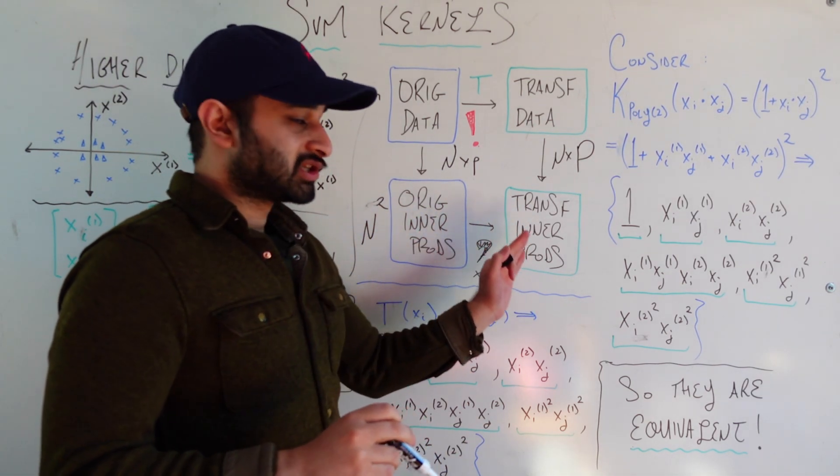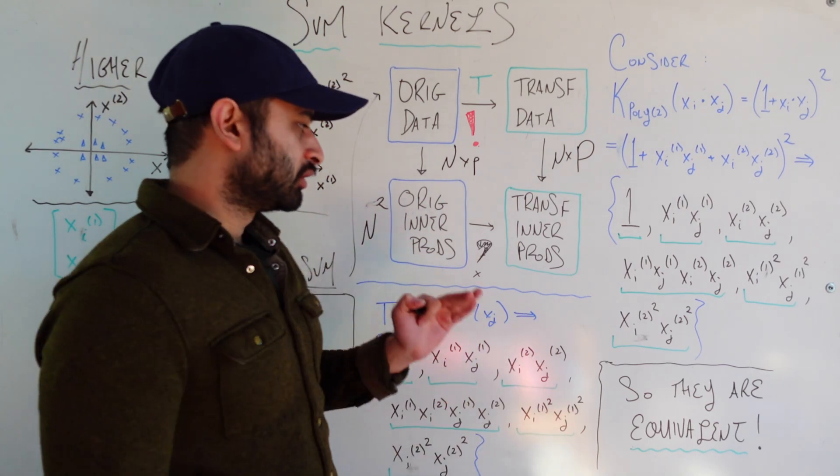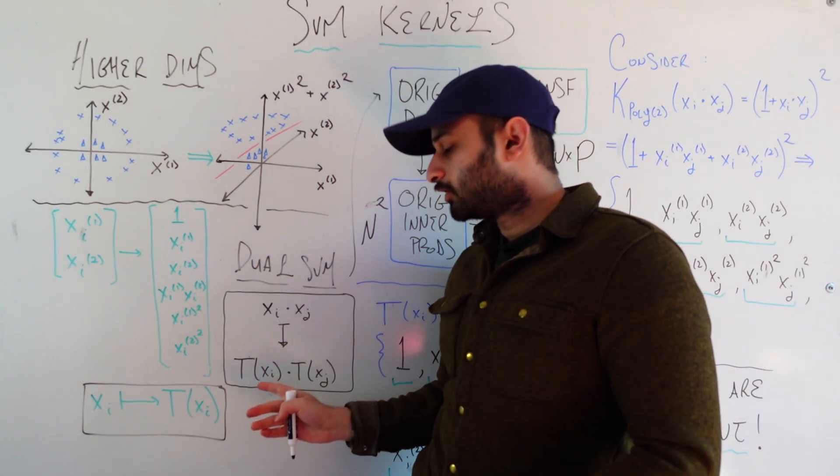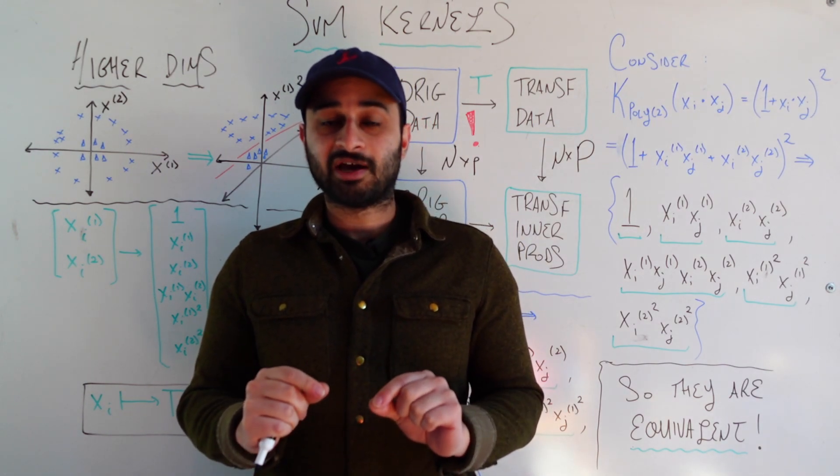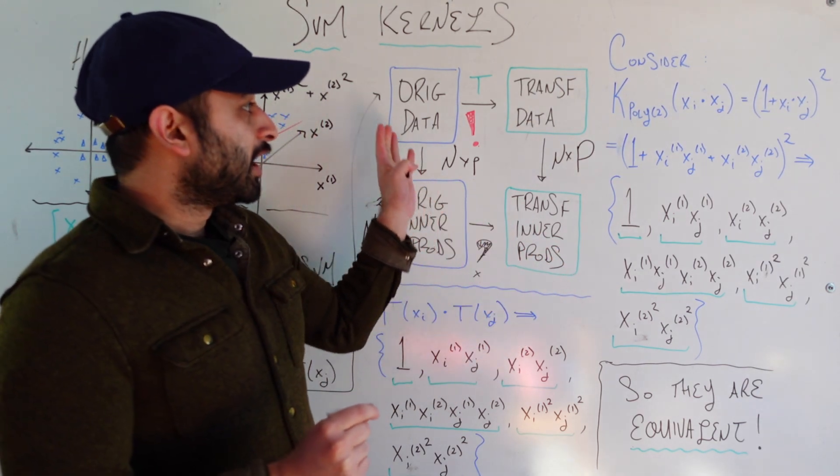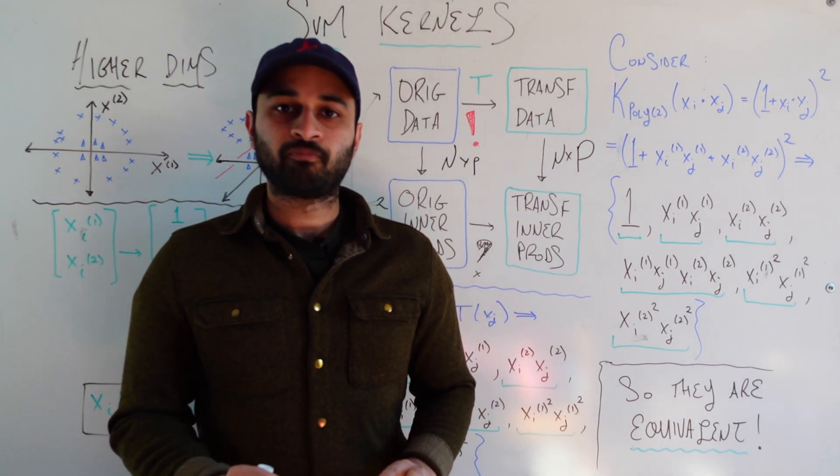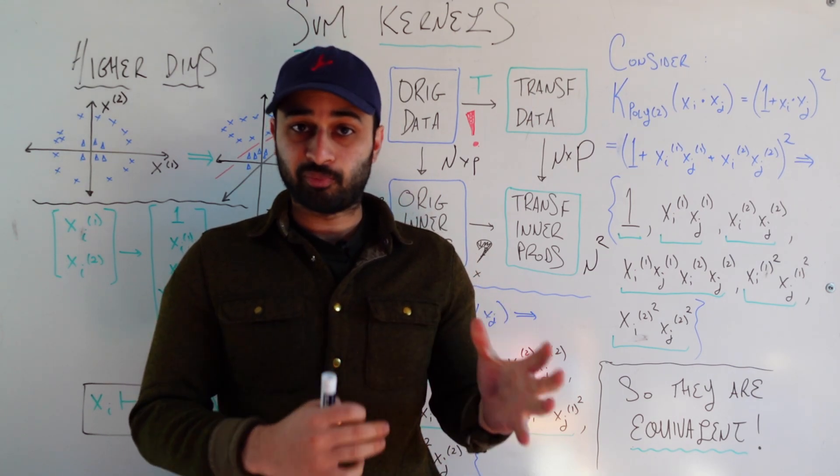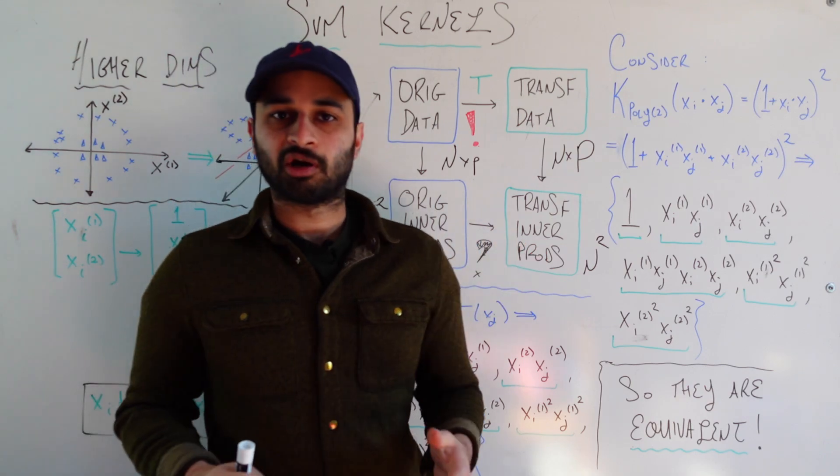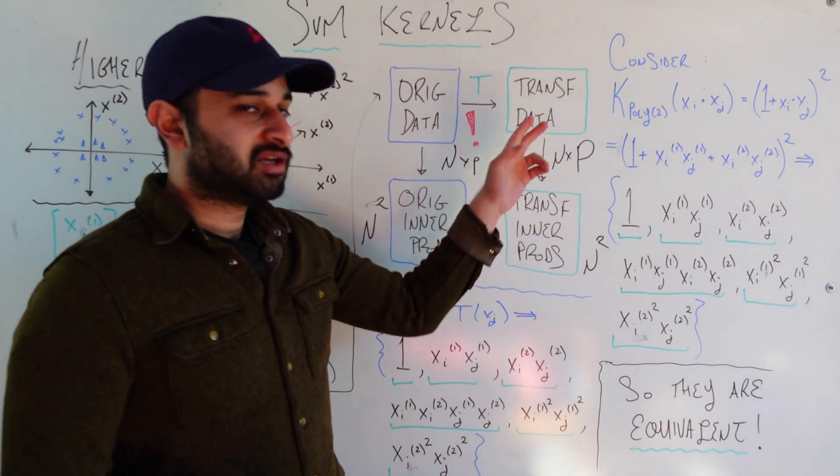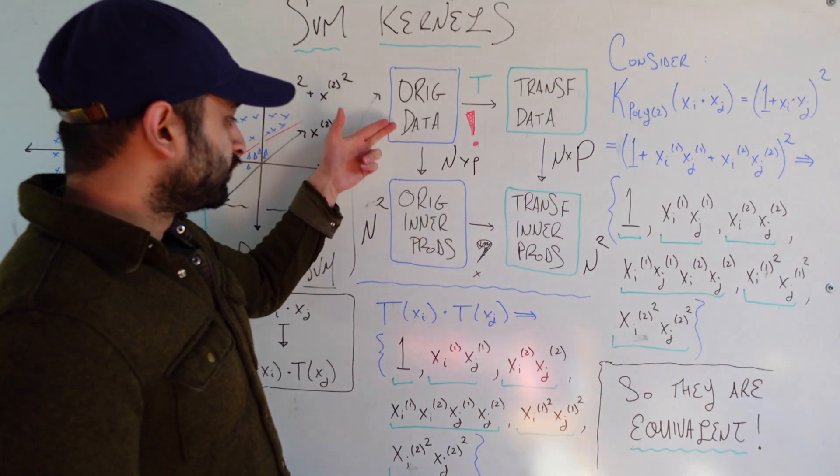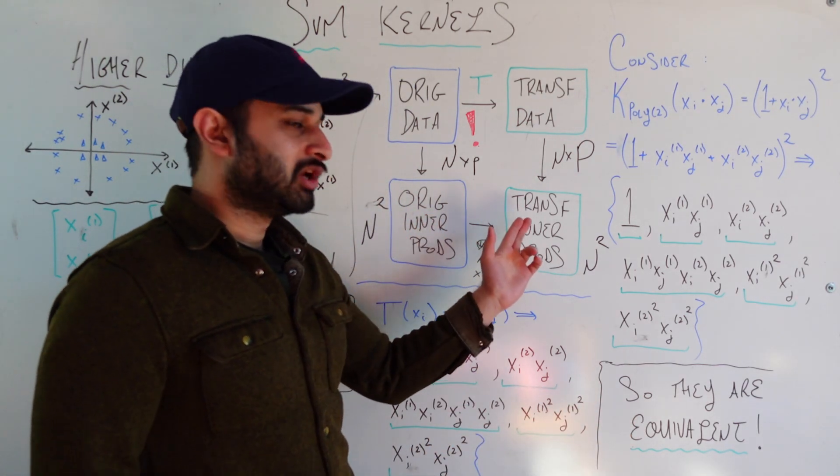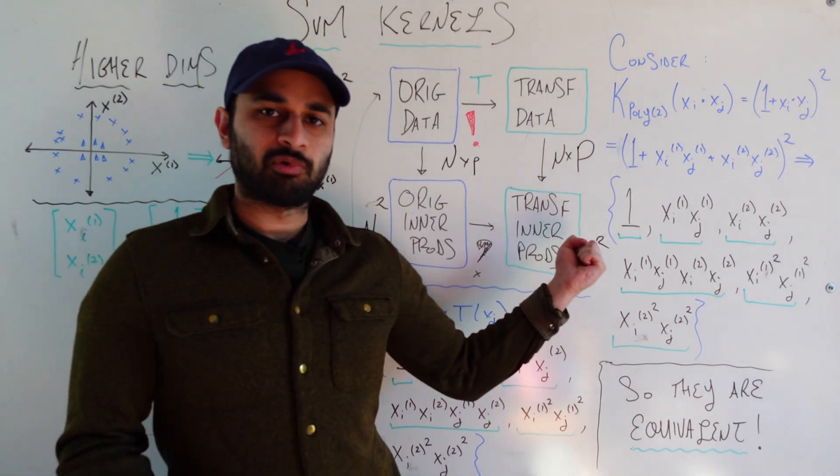And then there's some kind of function or transformation that's going to allow us to go from the original inner products, that is xi dot xj, directly to the transformed inner products, that is T of xi dot T of xj. And the very crucial thing to note is that we are going directly from the original inner products to the transformed inner products, and skipping this explicit transformation altogether. The transformed inner product space is also n squared, because in transforming the data we're not adding any new samples, there's still n samples. So instead of having to go through this route of getting this very high dimensional matrix living in memory, we go down this route, which is much more efficient in certain cases.